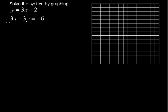When we have a system of equations, we're looking for that ordered pair that satisfies both equations. Each one of these equations has infinite solutions. For example, you could plug in 1 for x and the corresponding y would be 1 in the first equation. However, it would not fit in the second equation. So we're looking for that one point.